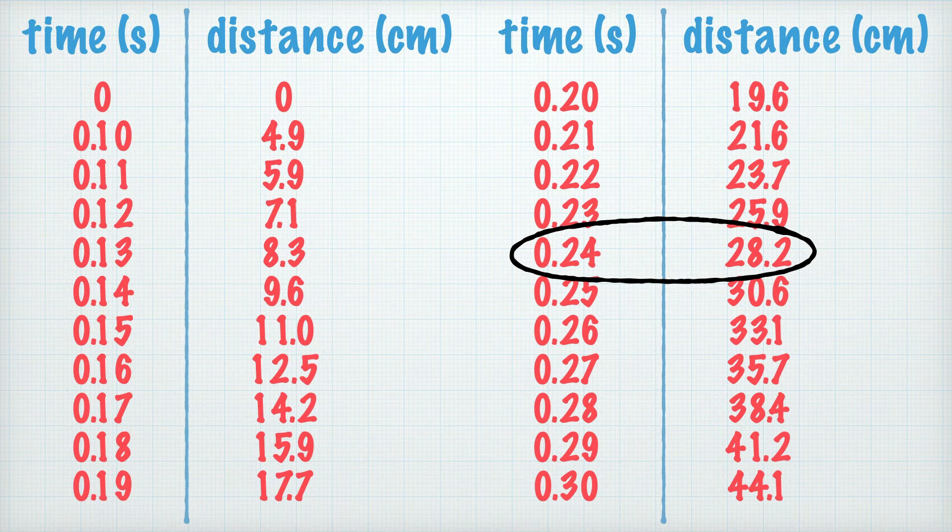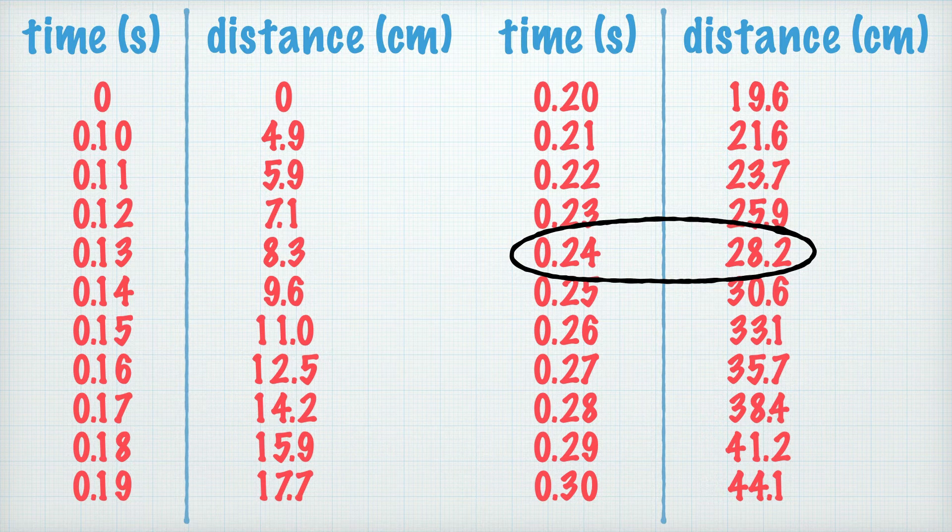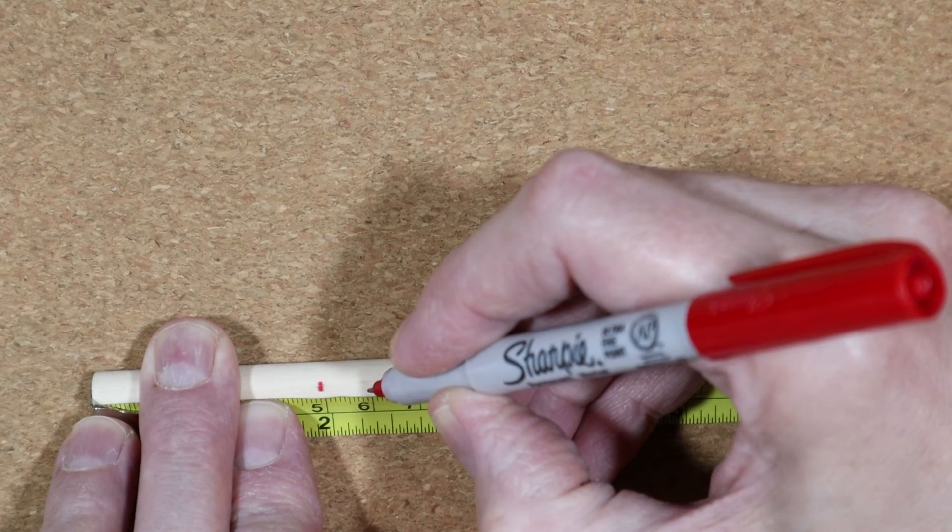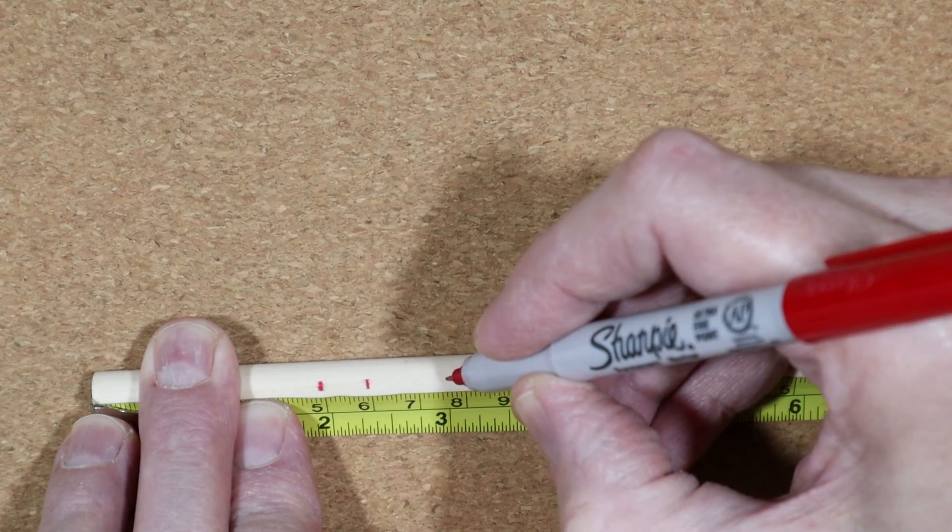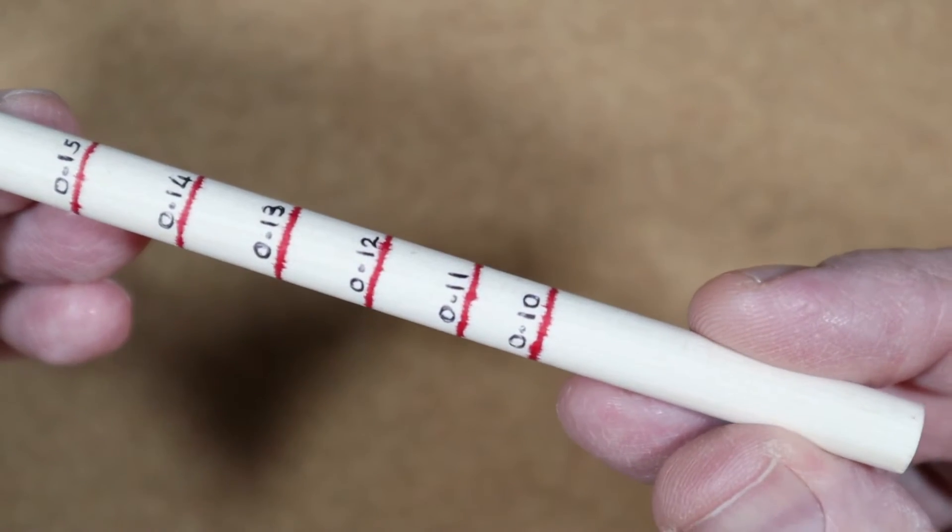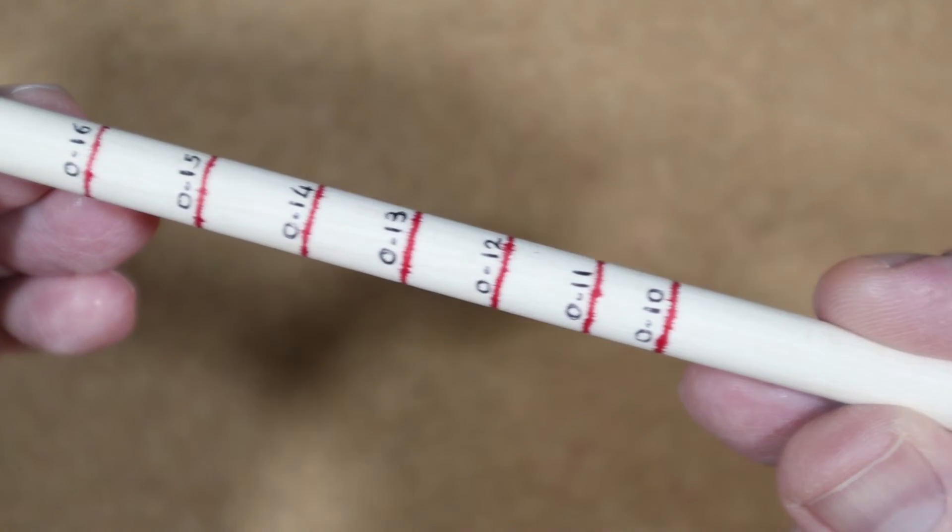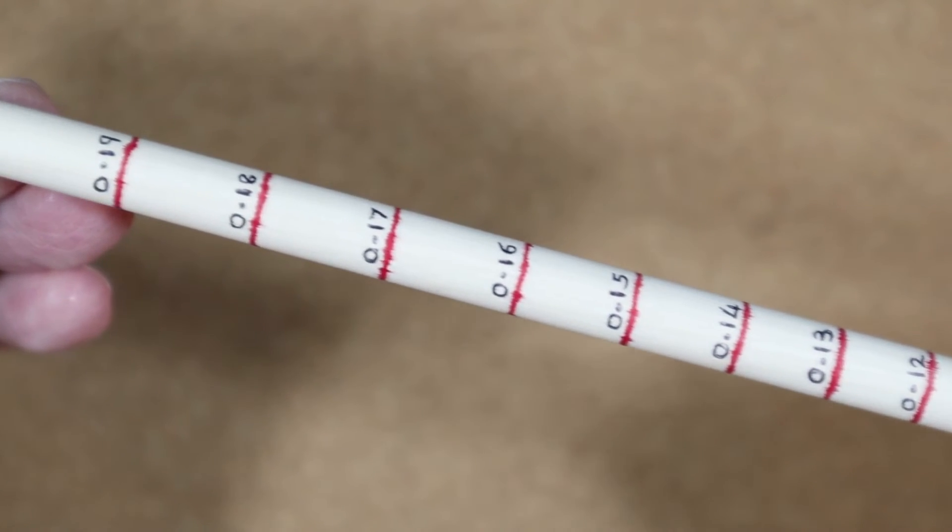So we should make a line 28.2 centimeters from one end of the rod and mark it as 0.24 seconds. We should also do the same for all the other values so that we end up with something like this. If you're making one yourself, then you could always paint the rod first to make it a little more attractive.